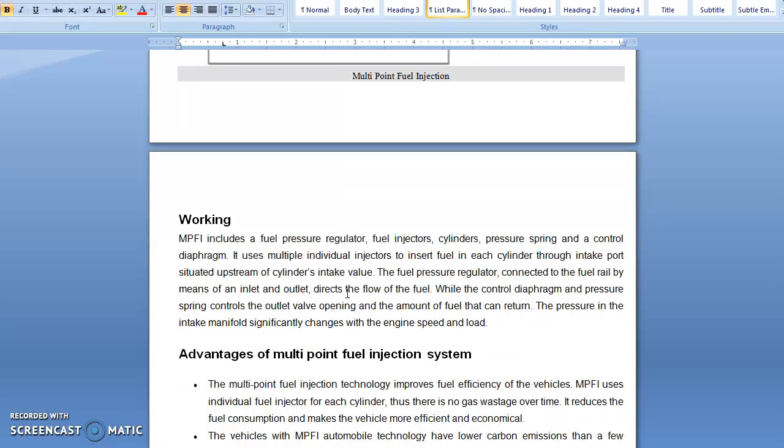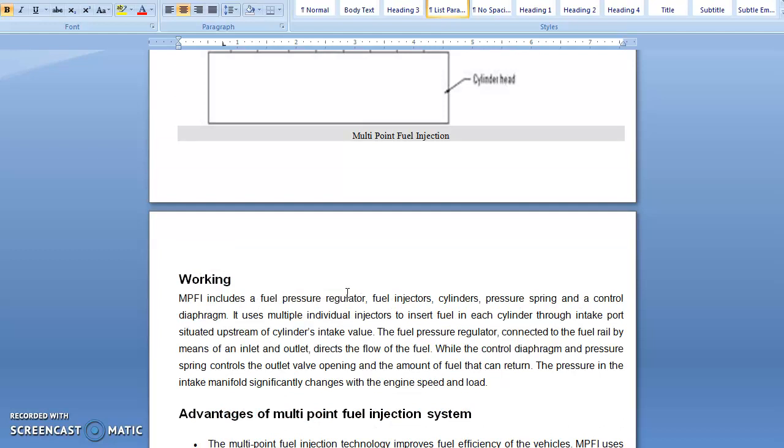Let us discuss the working of this MPFI system. MPFI includes a fuel pressure regulator, fuel injectors, cylinders, pressure spring, and a control diaphragm. It uses multiple individual injectors to insert fuel in each cylinder through intake port, situated upstream of cylinder intake valve. The fuel pressure regulator connected to the fuel rail by means of an inlet and outlet directs the flow of the fuel.